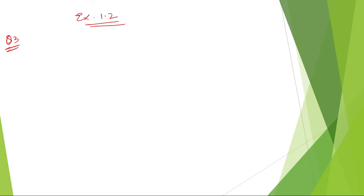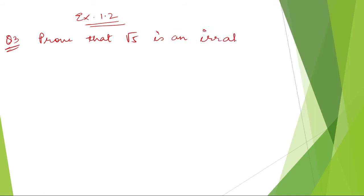What does the question say? Prove that root 5 is an irrational number.